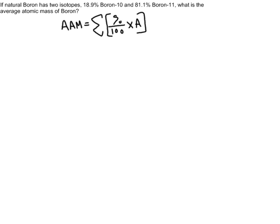If natural boron has two isotopes, 18.9% boron-10 and 81.1% boron-11, what is the average atomic mass of boron?